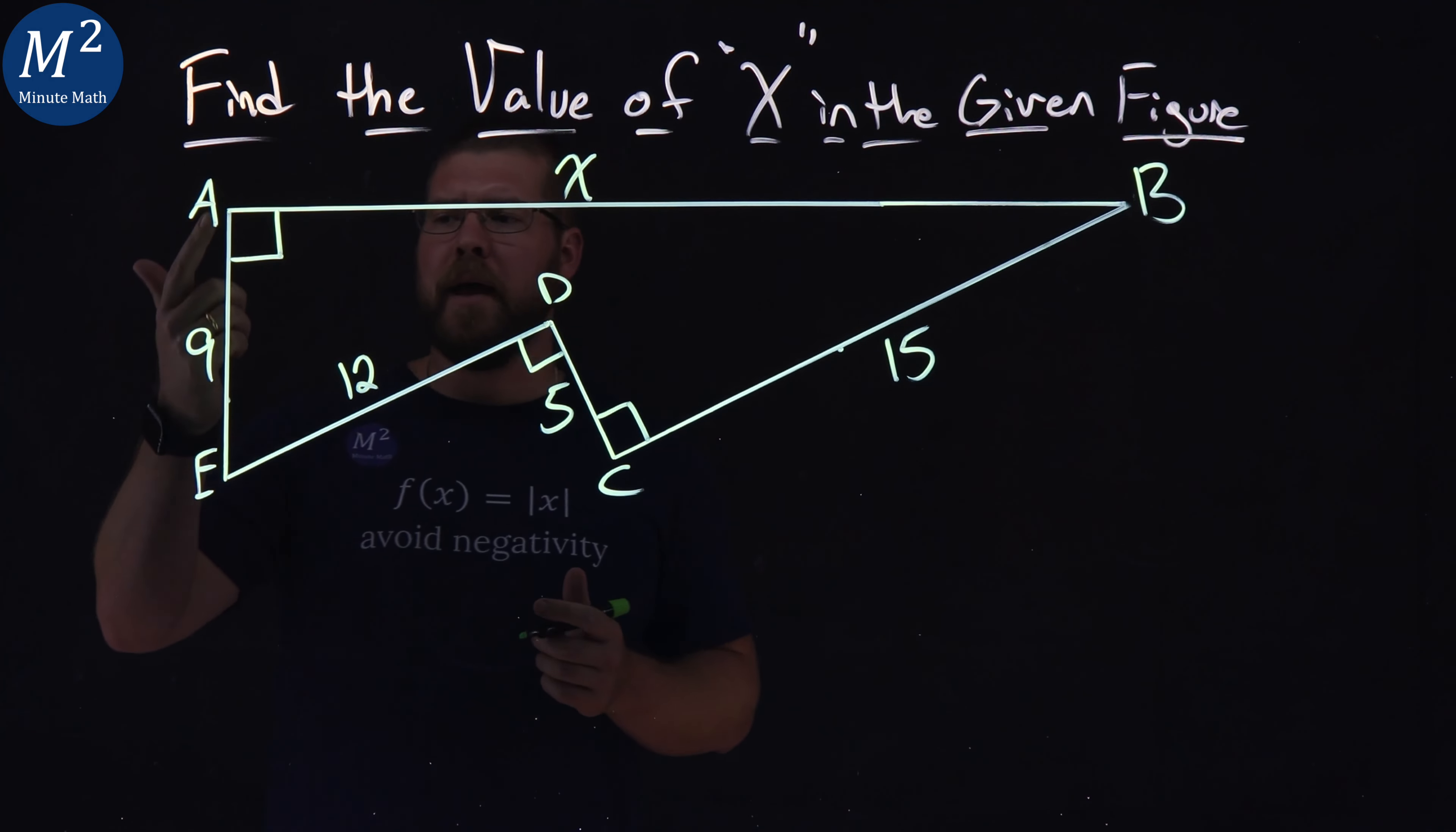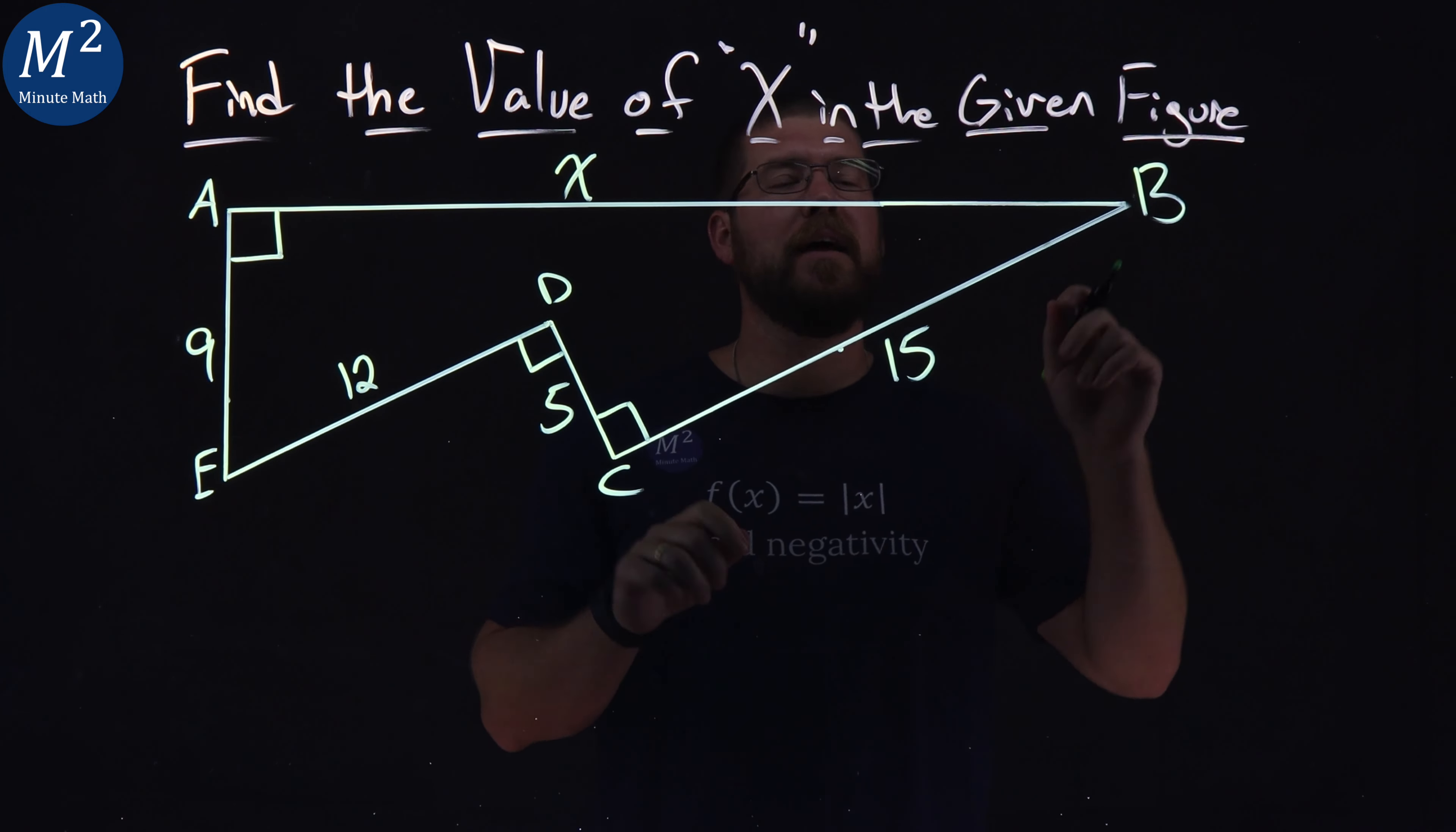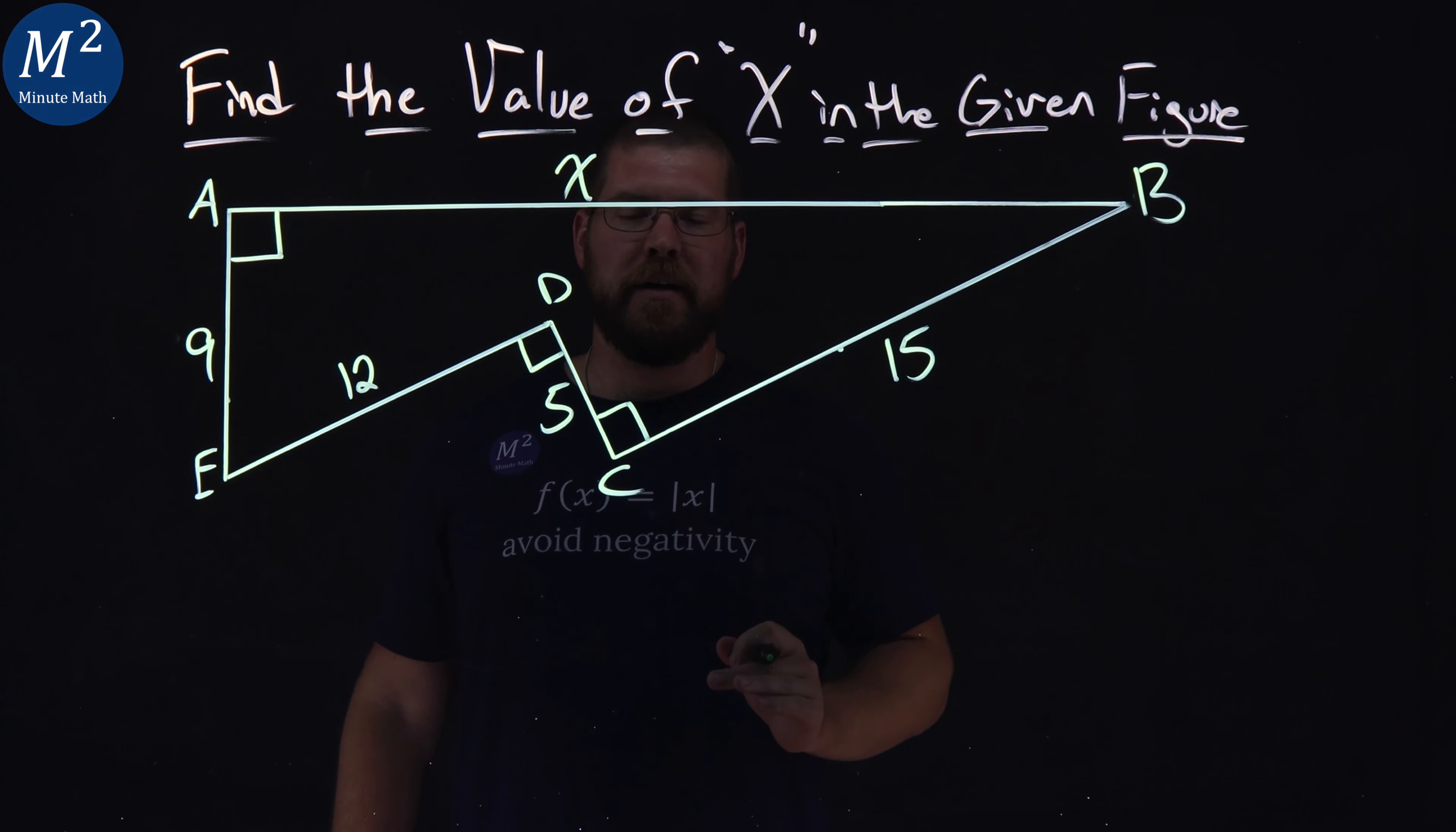The figure has a right angle, 9 goes to AE, then 12, and then a right angle from D to C with length 5, another right angle, C to B is 15, and B comes back to A which is the length of x that we need to find. With just that information, can you figure out what the value of x is?